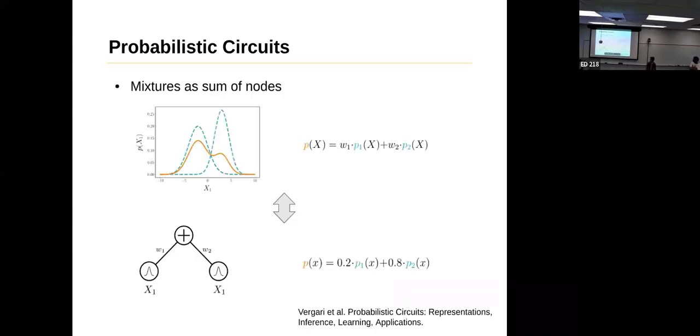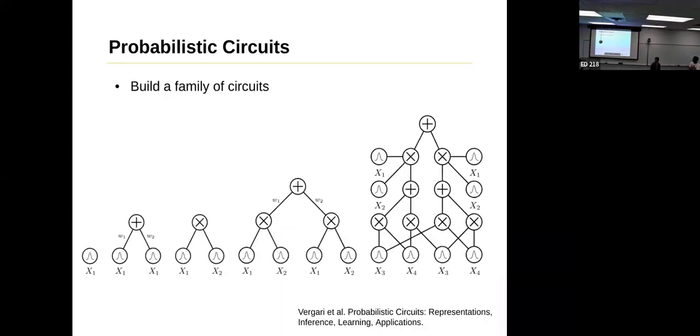We can have sum of nodes, which is a mixture. As you can see here, you can have p(X) composed as a mixture between p1 and p2. Another constraint, similar to the factorization, is what they call smoothness. In this case, as you can see here, you have X1 and X1, and that is the only thing that is possible when you add them as mixtures. You cannot have different variables such as X1 and X2. Because of that, you are now able to build families of circuits.